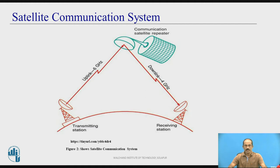When you consider terrestrial communication, you have three things: a transmitting station, a receiving station, and some repeaters placed in between. If there is no direct line-of-sight path between the transmitting and receiving station, we need to place a repeater. The repeater takes the signals from the transmitting station, removes noise, amplifies the signal, and retransmits to the receiving station. So here, the satellite works exactly the same as a repeater in terrestrial communication — it takes the signals from the transmitting station, removes noise, amplifies the signals, and retransmits to the receiving earth stations.